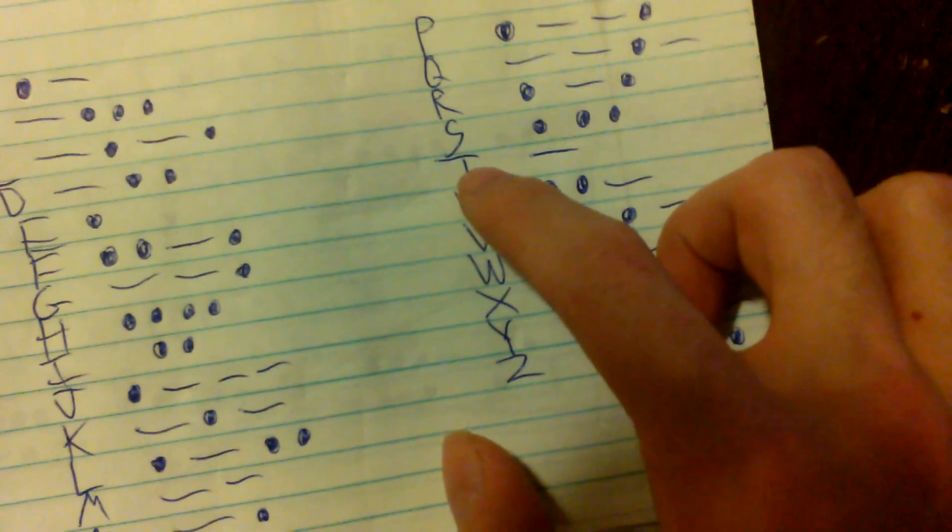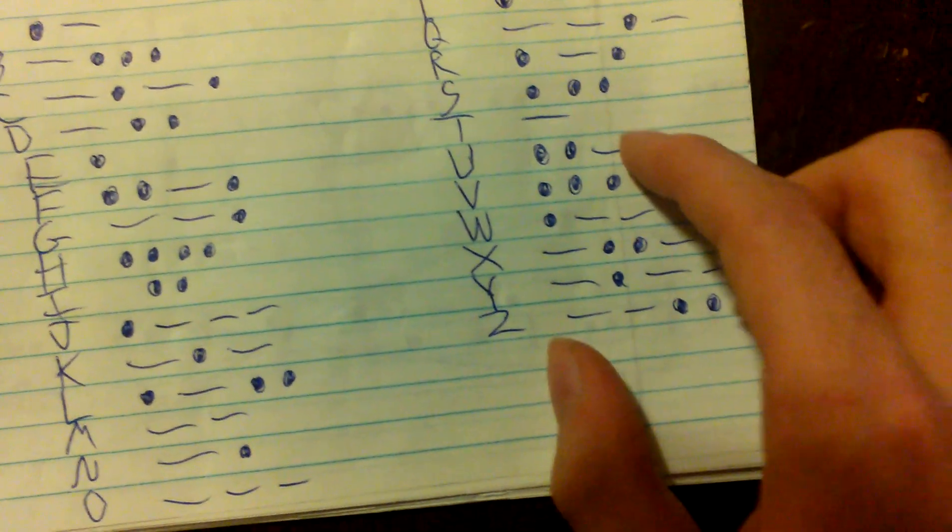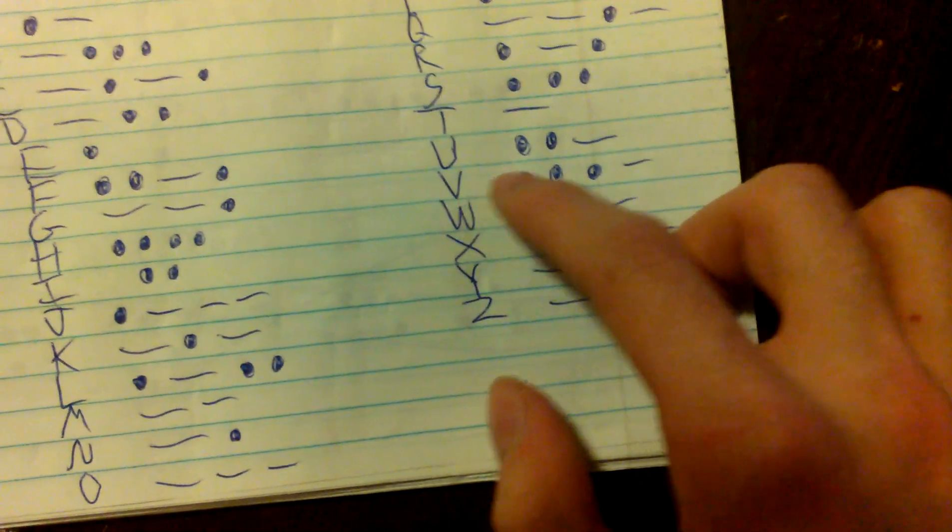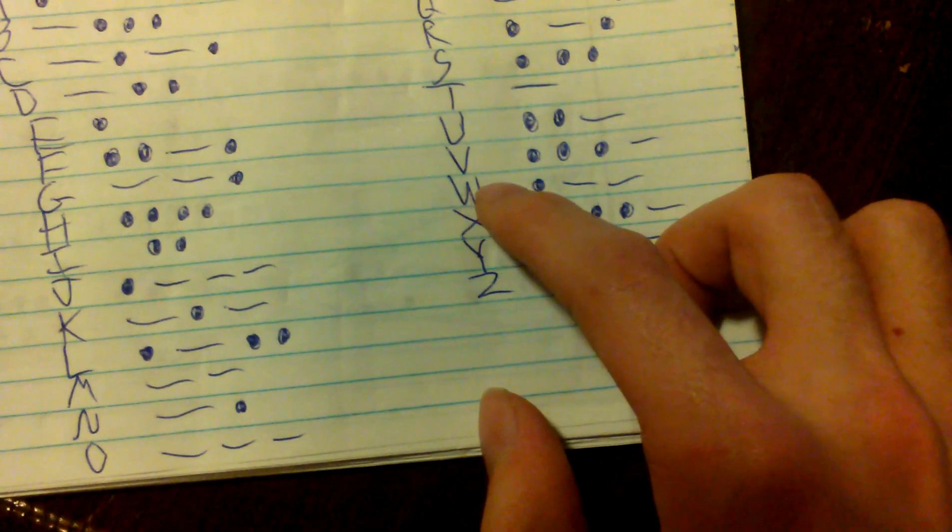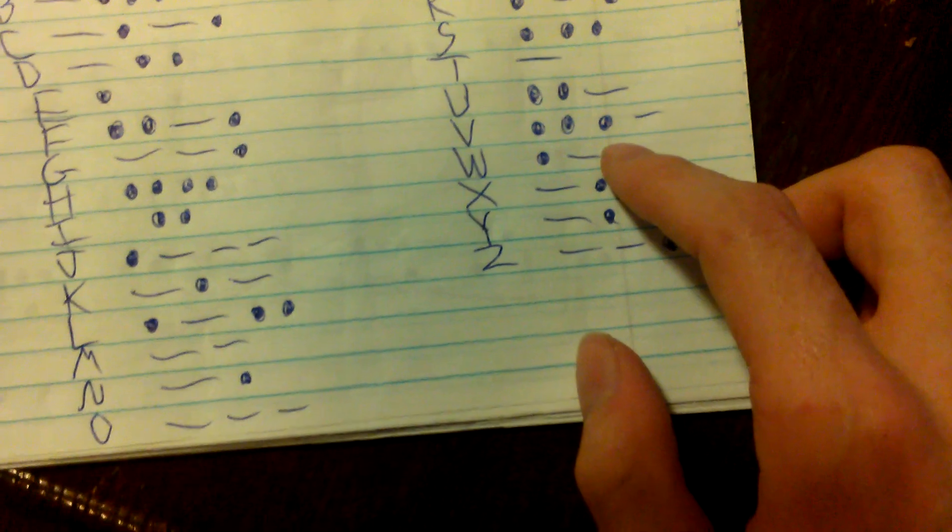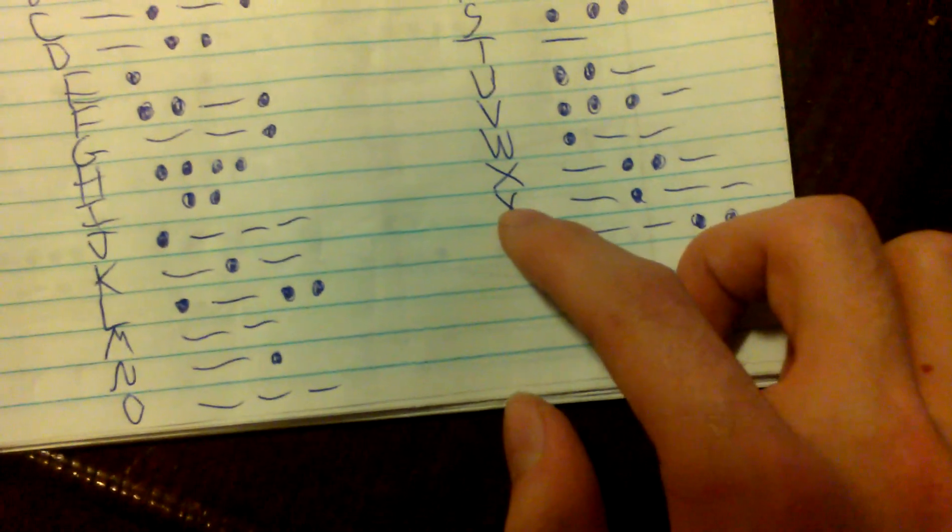T is only made up of one dash, a U is made up of two dots and one dash, a V is made up of three dots and one dash, a W is made up of one dot and two dashes, and X is dash dot dot dash.